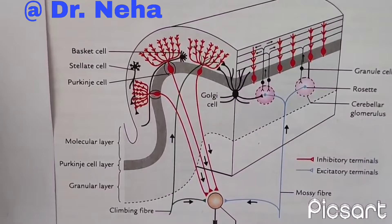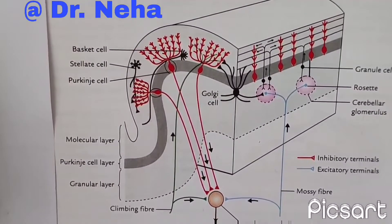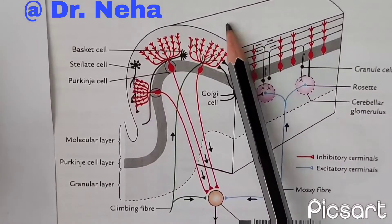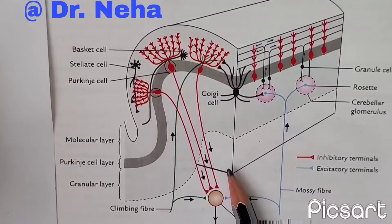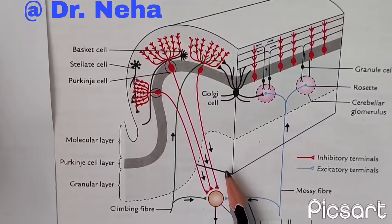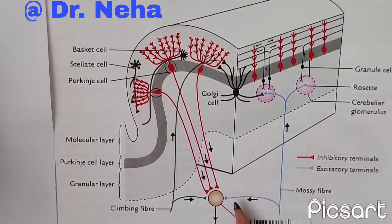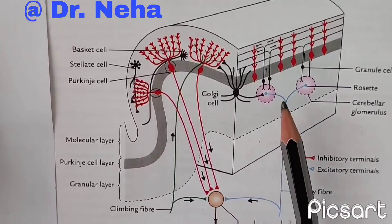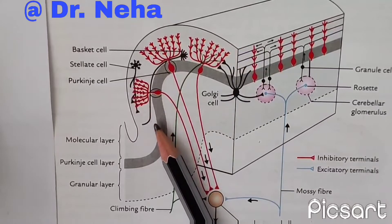Now the internal structure of the cerebellum: the cerebellum is made up of a thin surface layer of gray matter known as the cerebellar cortex, and a central core of white matter. Embedded within this central core of white matter are masses of gray matter termed the intracerebellar nuclei. In the cortex we have three layers.